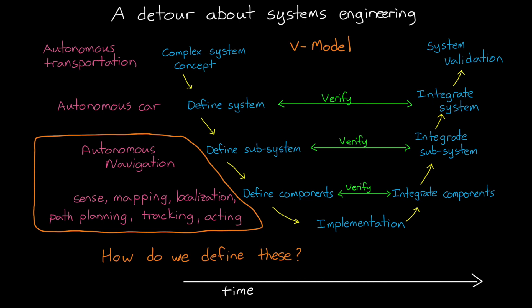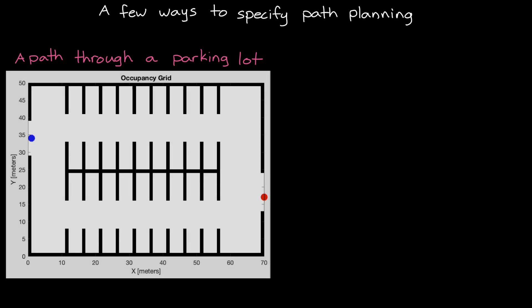This again is where metrics can play an important role, because they provide an objective characterization of the system or component. To illustrate some of the metrics that might concern you within autonomous navigation, let's look at a few ways to specify the path planning component. We ask ourselves, what characteristics do we want the path planning algorithm to have? And as an example, let's look at planning a path through a parking lot.